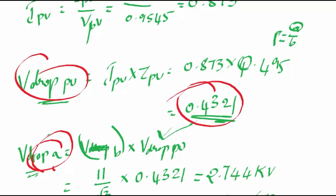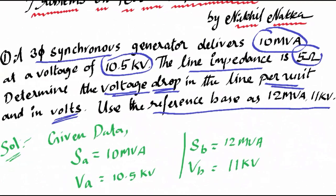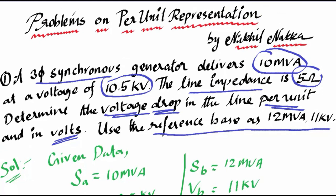So we have obtained both required values: voltage drop per unit is 0.4321 and actual voltage drop is 2.744 kV. In this manner we solve problems in the per unit system. By doing more problems we will get deeper insights. Per unit system is a very core tool in power system analysis that makes the analysis much simpler. Thank you, please like, share, subscribe, and drop any comments if you have doubts.